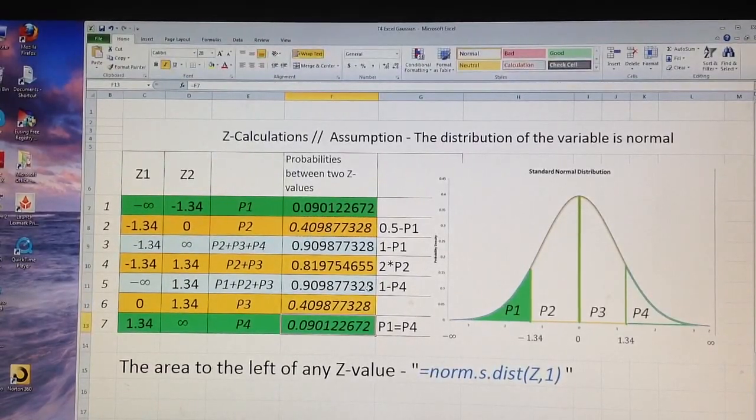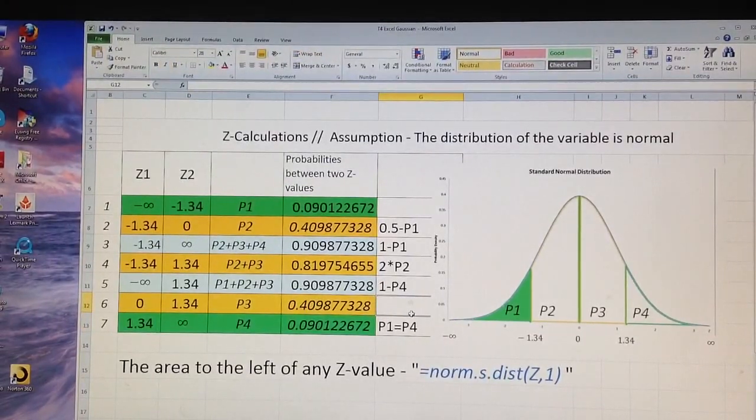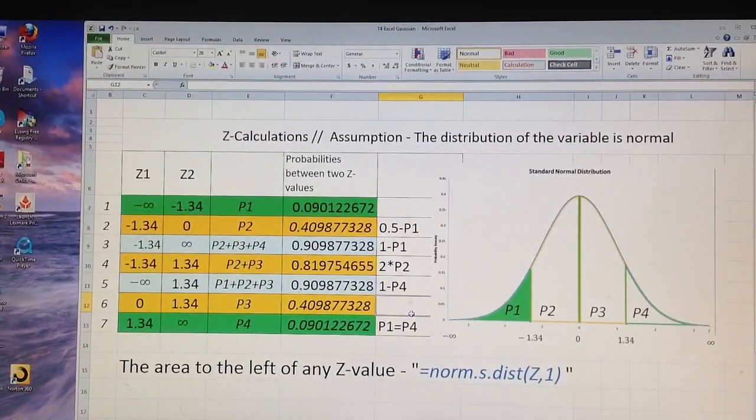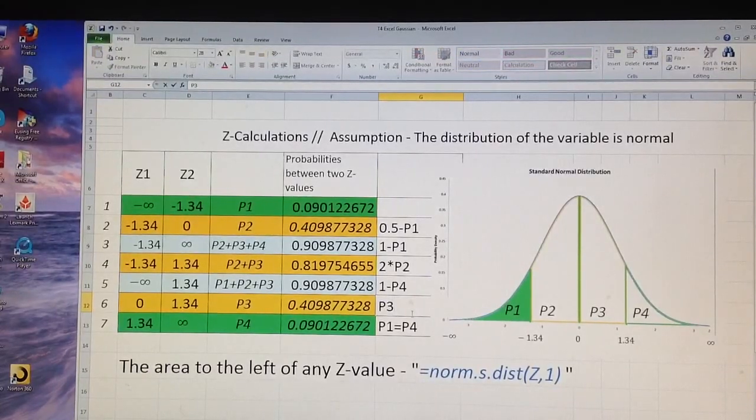And you can see the symmetry of all these probabilities, how they are the same on both sides, and this was P3 is equal to P2. And this is all for today. Have a great day.